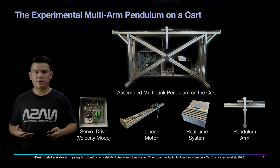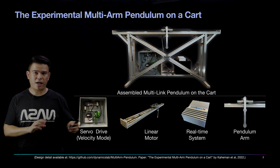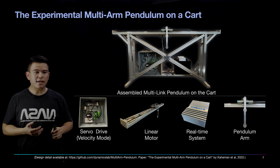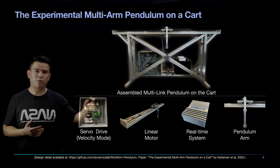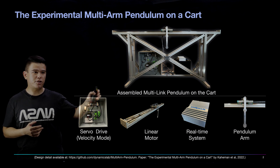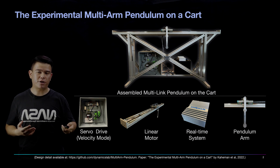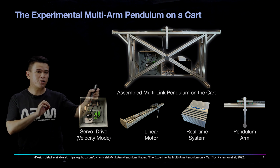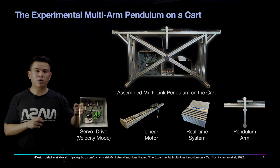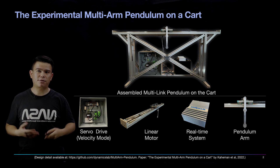The servo drive is basically providing electrical energy to our actuator — in this case, the linear motor. The linear motor is responsible for moving back and forth, and while it's moving it's going to perturb the motion of the pendulum arm. That's basically how we control it. There's no motor installed in the pendulum arm; the only control we have is moving the pendulum cart. That's why our system is underactuated.